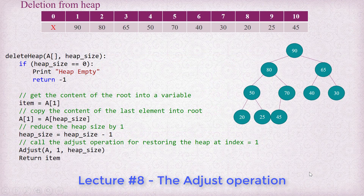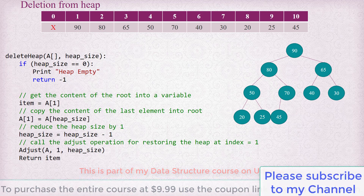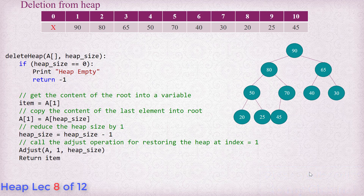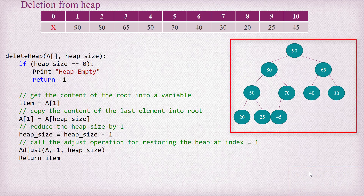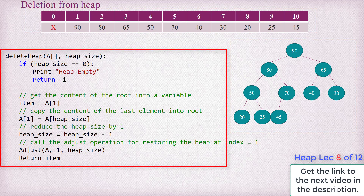Hello friends. In the last tutorial, I explained the procedure of heap deletion as well as how to adjust the heap after copying the content of the last heap element into the root. In this tutorial, we are going to understand the algorithm more clearly for both heap deletion and adjust operation with visualization side by side using an example. You can see the example heap tree on the right-hand side of the screen, also the actual representation of the same heap in a one-dimensional array at the top. The heap delete algorithm is visible on the left side of the screen.